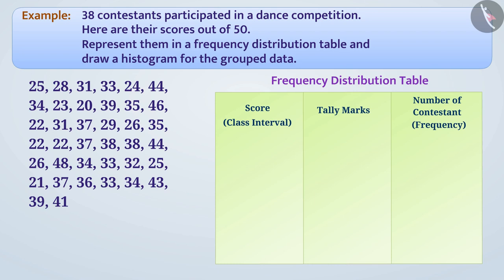Now, we will choose the class interval. Can you tell me the class interval we can take here? Think, think. Let me tell you, we see that the smallest observation is 21 and the largest observation is 48.